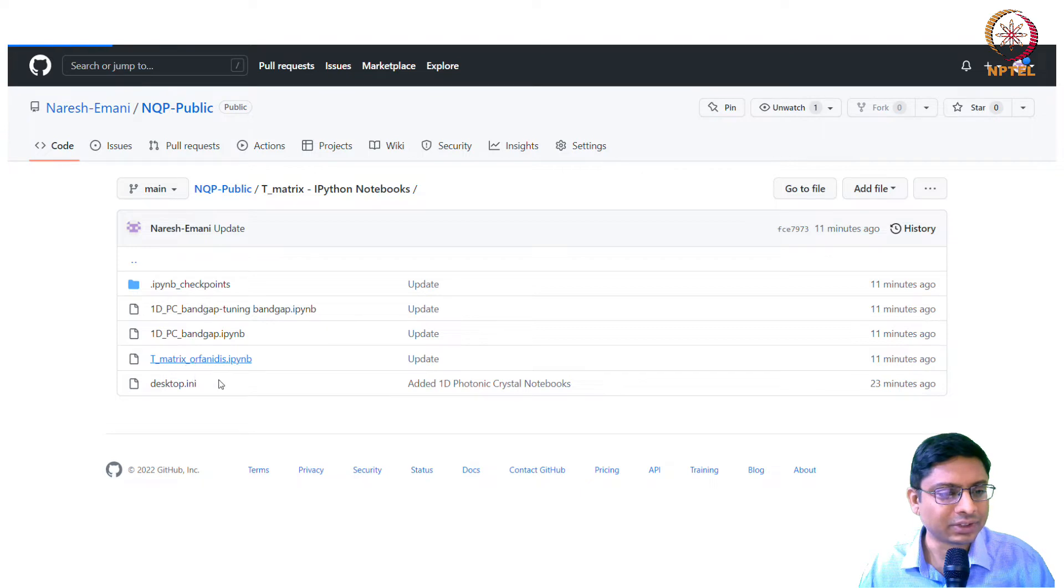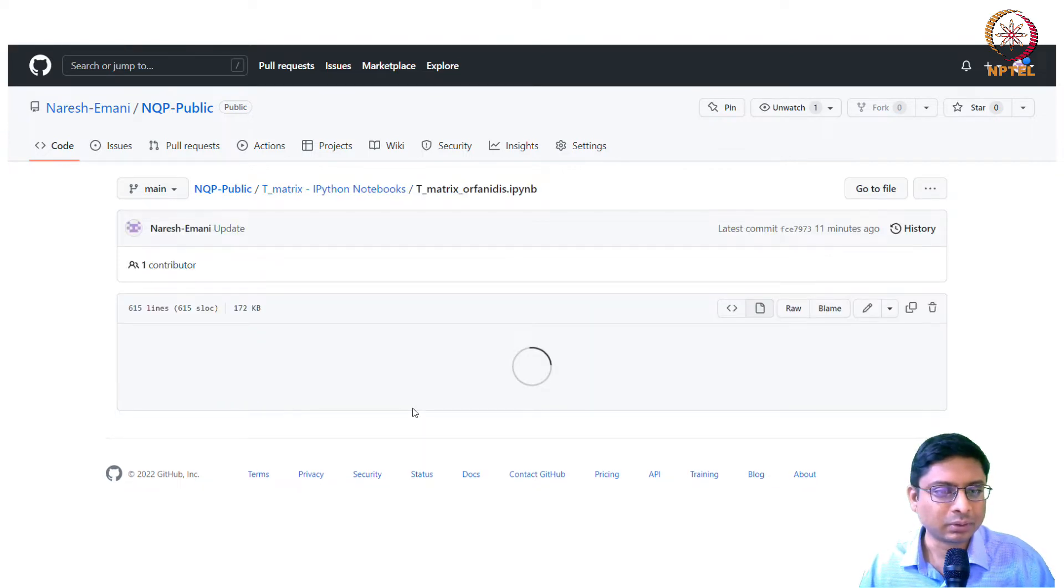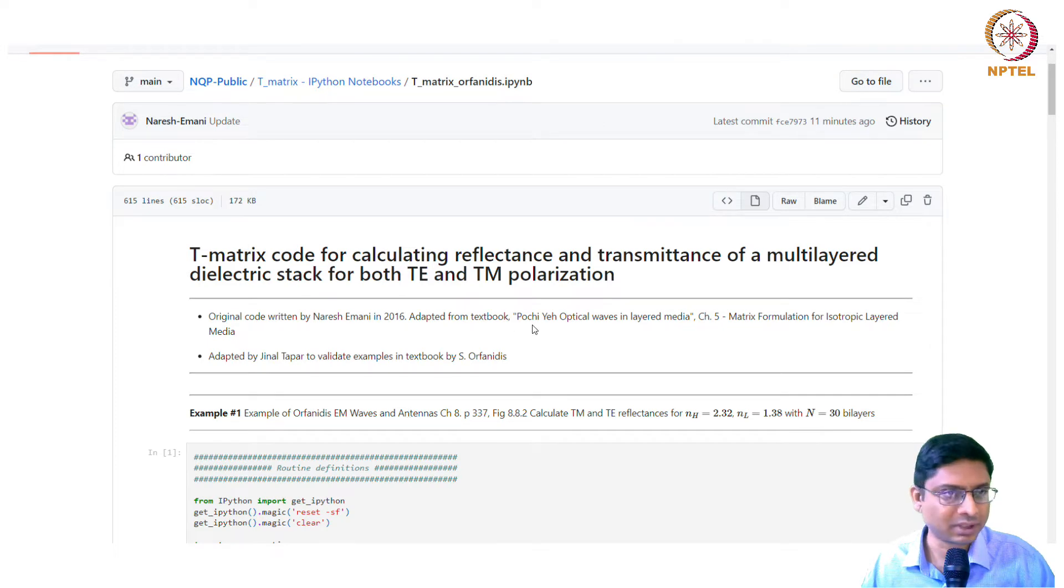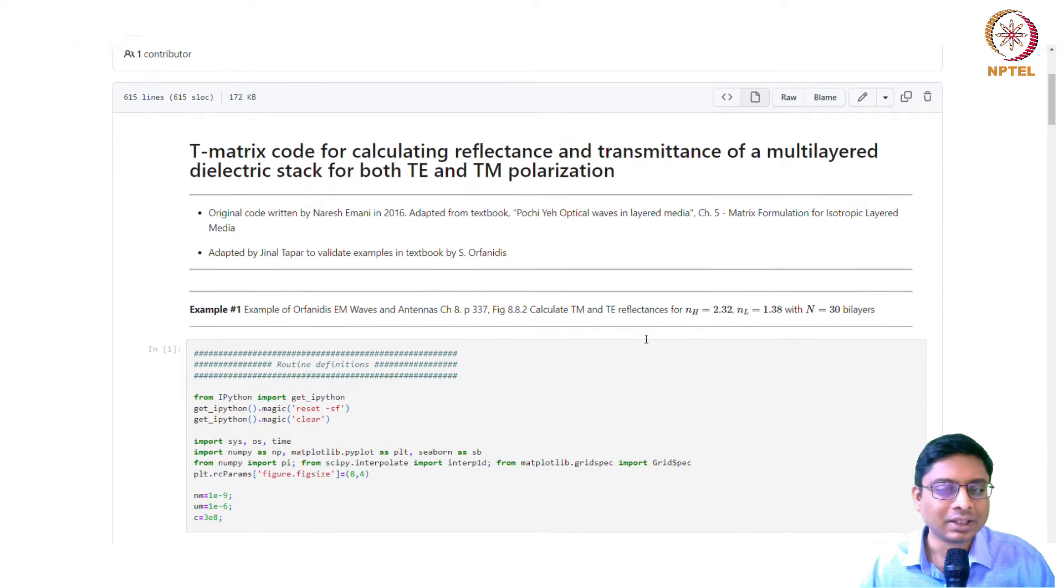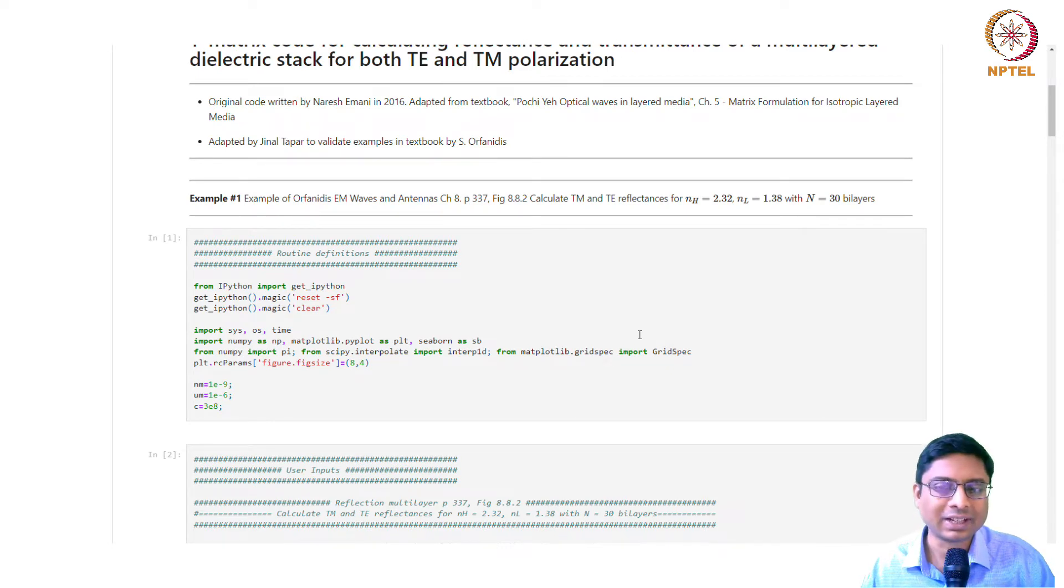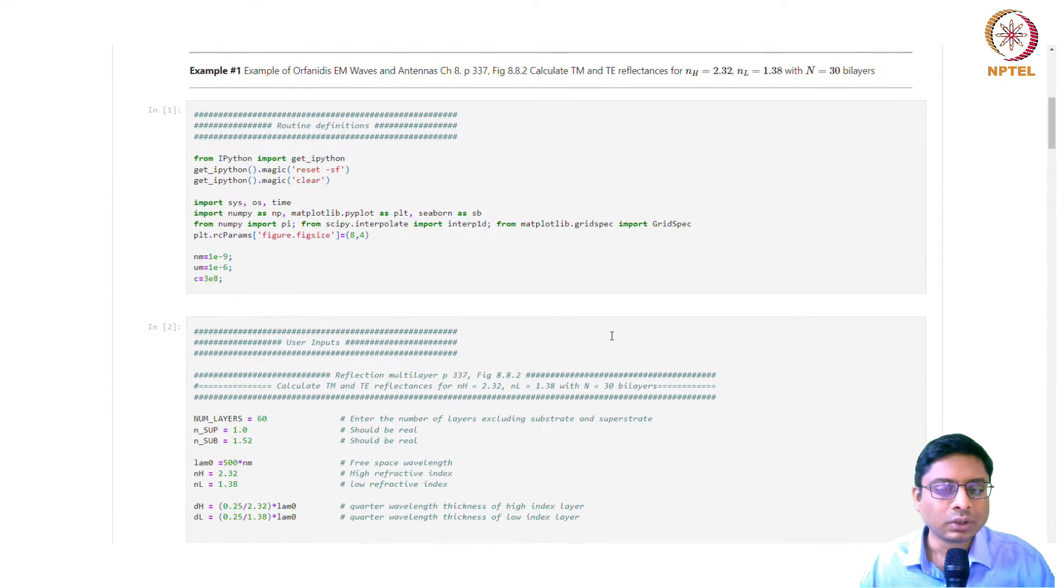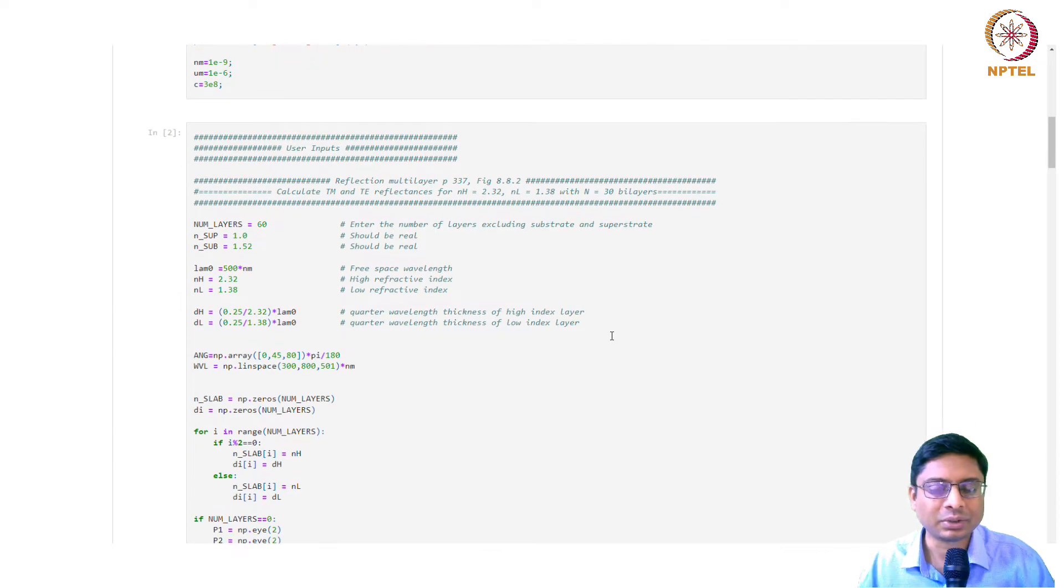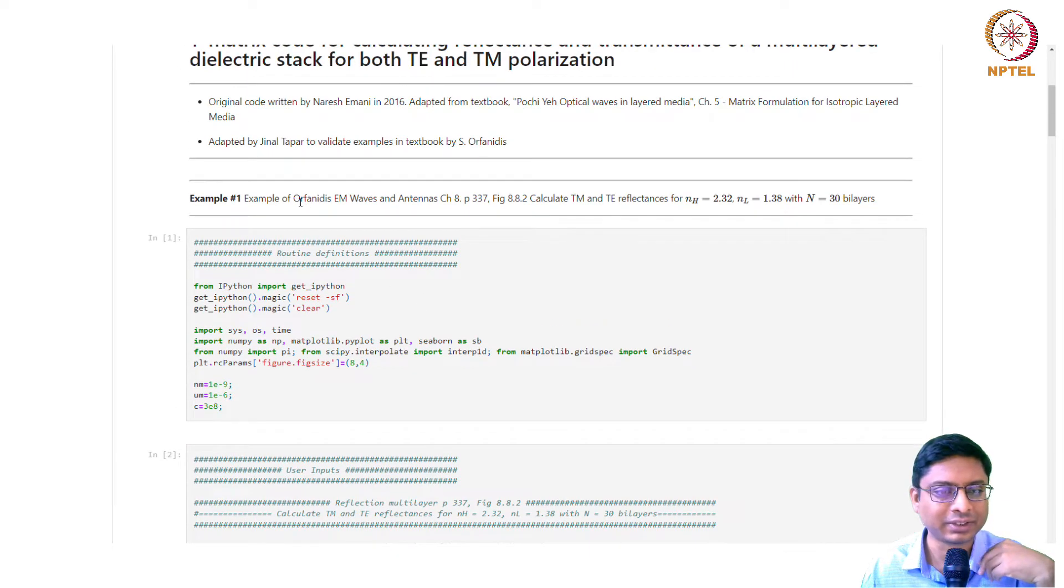The first one is this T-matrix code. We have essentially taken the formulation given in Pochi's textbook, Electromagnetic Waves in Layered Media. You can look at that chapter to understand the details, but broadly we have discussed this in class. What you have is essentially a layered stack, there's a substrate and a superstrate.